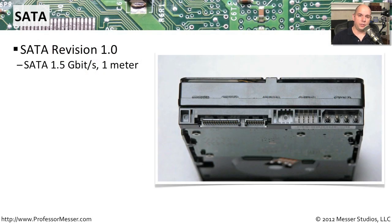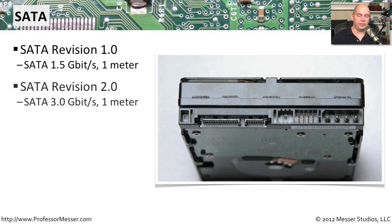The serial ATA or SATA standard is commonly seen on today's computers. The first revision of SATA allowed 1.5 gigabits per second of throughput, and the maximum cable length between the SATA interface on your motherboard and the drive maxed out at about 1 meter. An updated revision 2.0 increased the speed up to 3.0 gigabits per second, still keeping the maximum cable length at 1 meter.